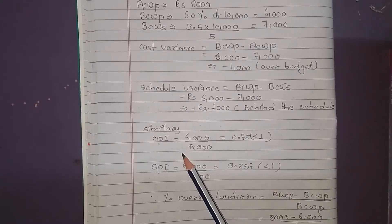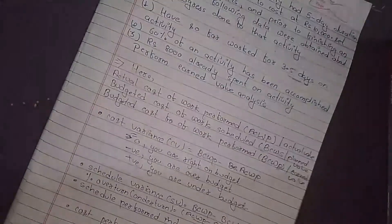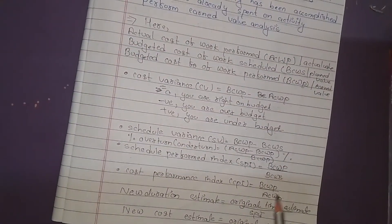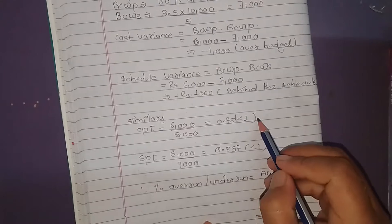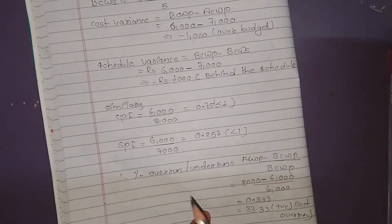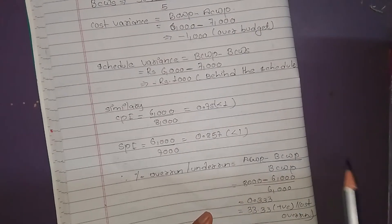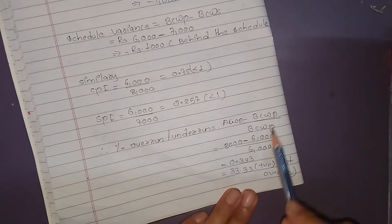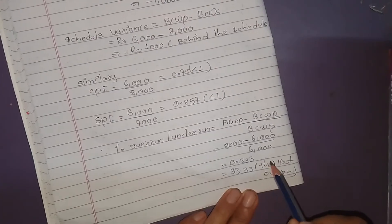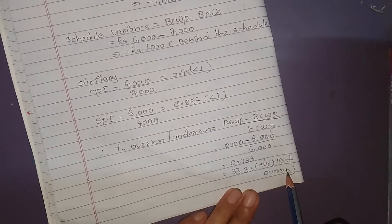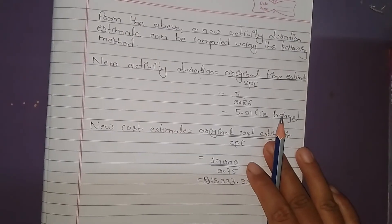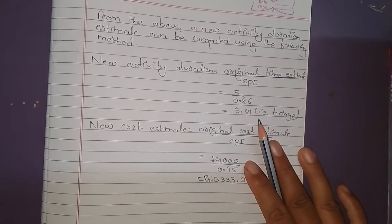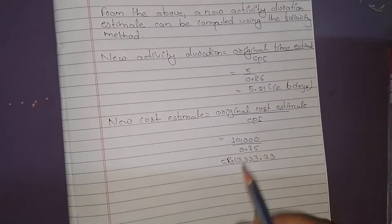The CPI formula is BCWP divided by ACWP, and the SPI formula is BCWP divided by BCWS. Using these formulas, we can compute the Cost Performance Index and the Schedule Performance Index for the activity.